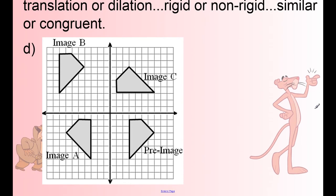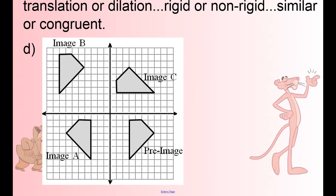Example D — I'd like you to do these problems on your own. The pre-image is down here. Pause the video and, on the side of your paper, identify these three images A, B, and C. Describe them: was it a rotation, a reflection, a translation, or a dilation? Was it rigid or non-rigid? And was it similar or congruent? When you're ready to come back and go through them together, hit play.